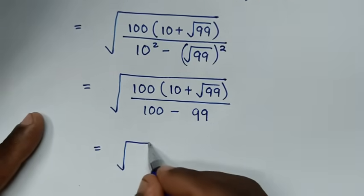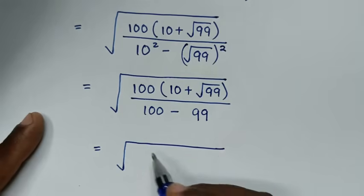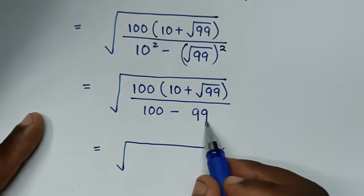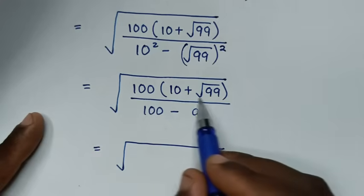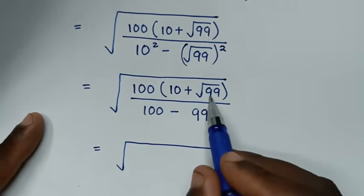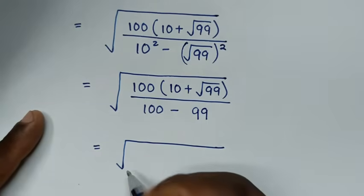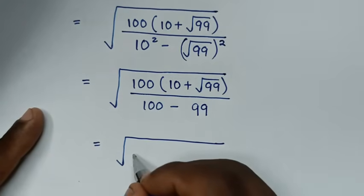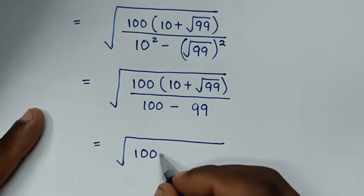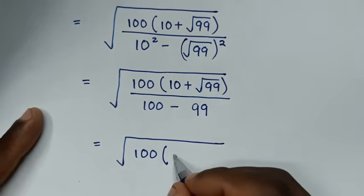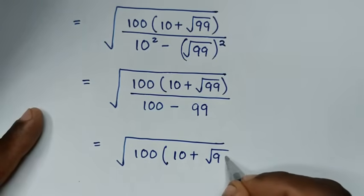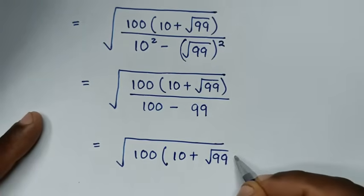From here, 100 minus 99 equals 1, so we're dividing by 1. The expression simplifies to square root of 100 times (10 plus square root of 99) in the numerator.